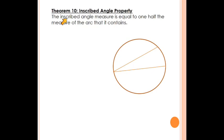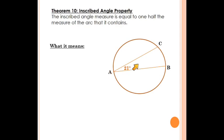Let's move on and learn about inscribed angles. Our property, Theorem 10, is that the inscribed angle measure is equal to one half the measure of the arc that it contains. Here we have an inscribed angle — note this is not a central angle because its vertex isn't at the center of the circle; the vertex is on the edge of the circle. The sides of the angle are not radii but are chords. We see our inscribed angle CAB here with a measure of 21.